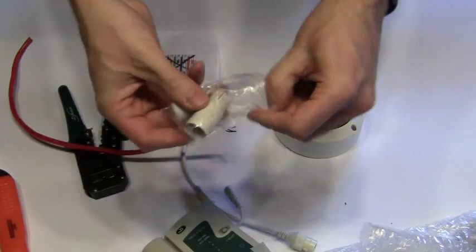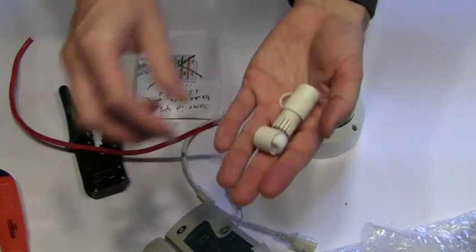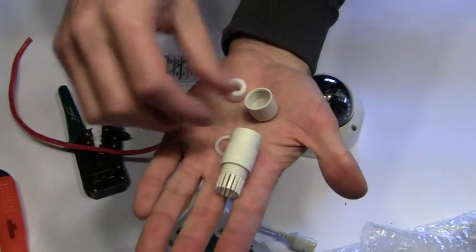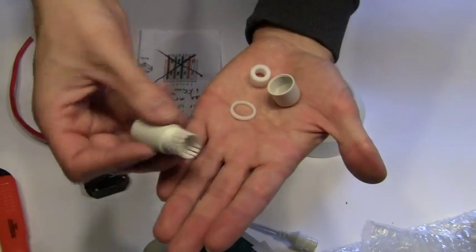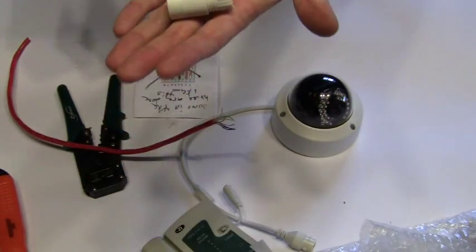I'll take the parts out of the bag here so you can get a closer look at exactly what we have. So there's a rubber washer and a couple of other parts: an RJ45 housing, an end cap, and a rubber grommet for inside the housing.